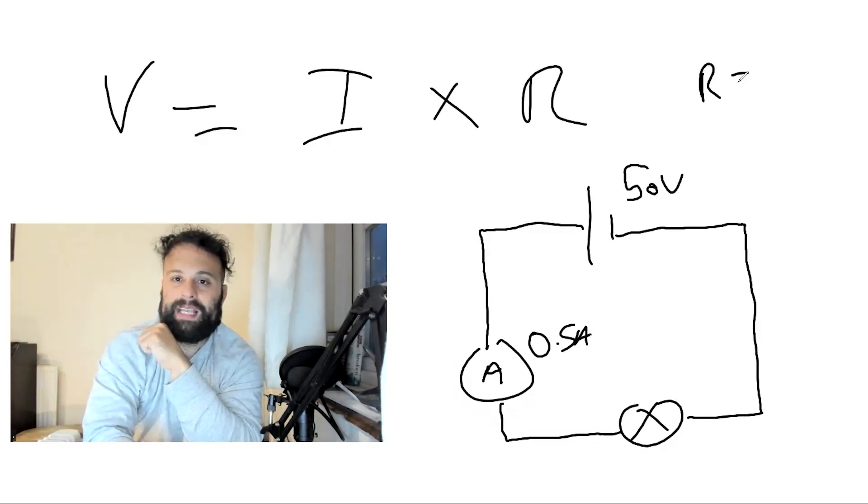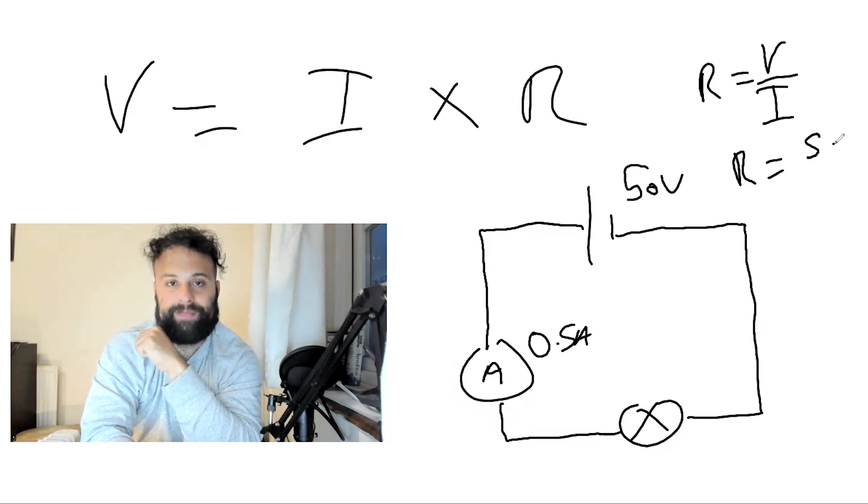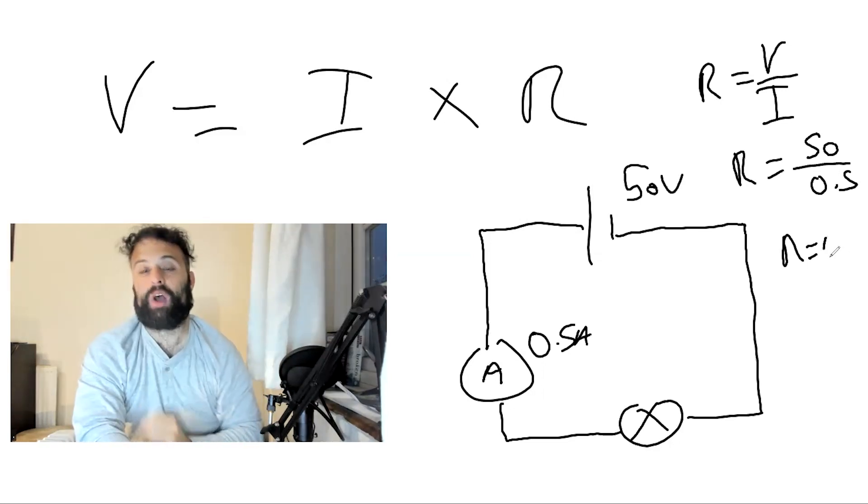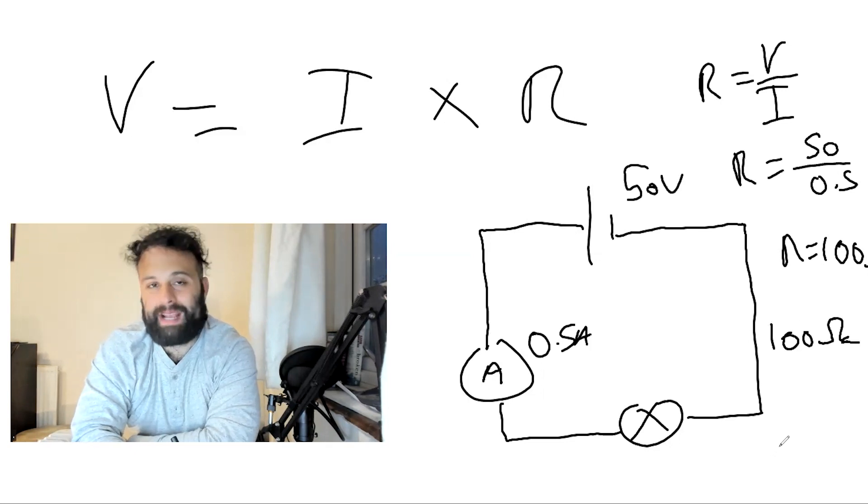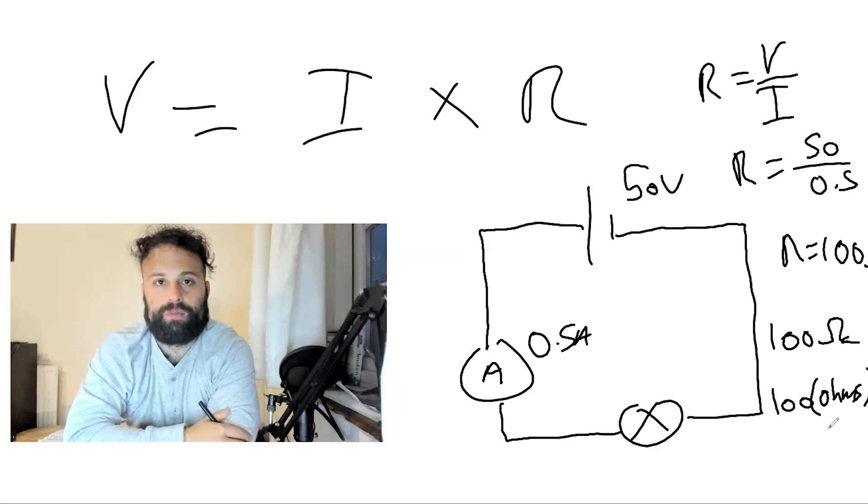So we know that resistance is voltage divided by current, so resistance is going to be the voltage, which is 50 divided by 0.5. That means the resistance is 100, and that is 100 ohms. So you could write it with that sign over there, or just write 100 ohms.